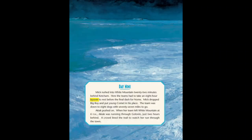Day nine. Mick rushed into White Mountain, 22 minutes behind Ketchum. Here, the teams had to take an eight-hour layover — and a layover is just a time where you wait or rest before continuing on your journey. They had to take an eight-hour layover to rest before the final dash for Nome. Mick dropped Big Boy and put Young Comet in his place. The team was down to eight dogs with 77 miles to go. Akiak pushed on. When her team left White Mountain at 6 p.m., Akiak was running through Golovin, just two hours behind.